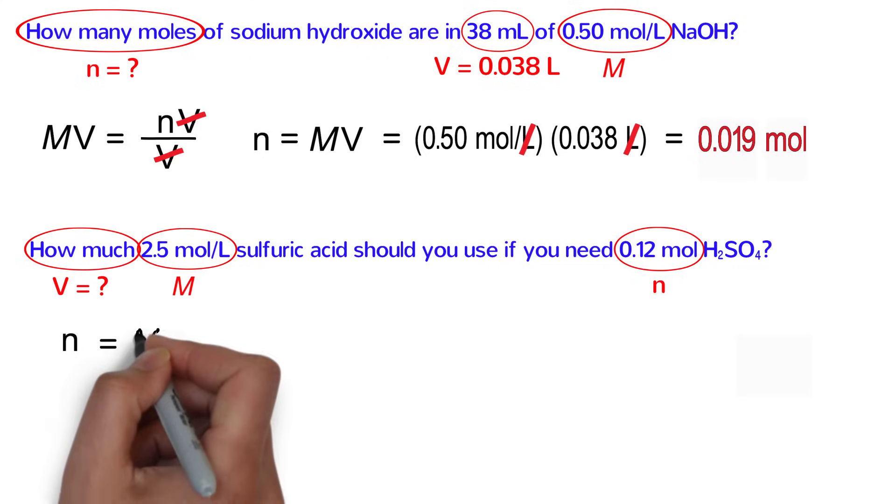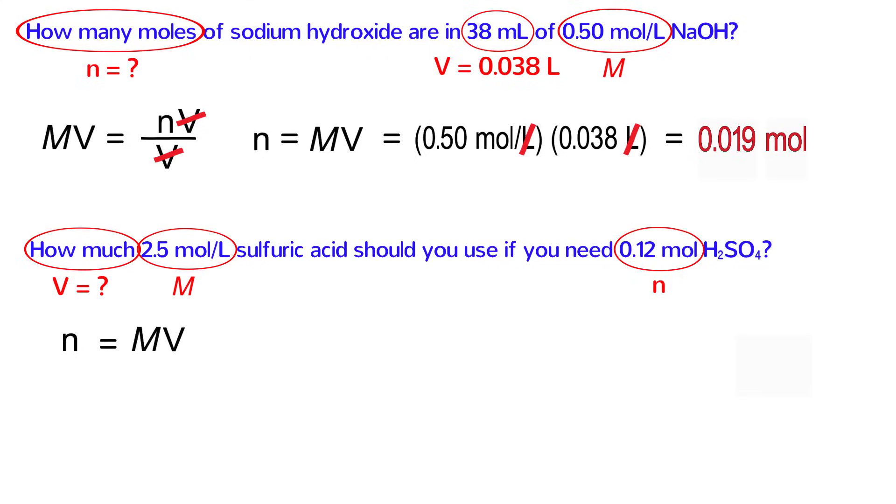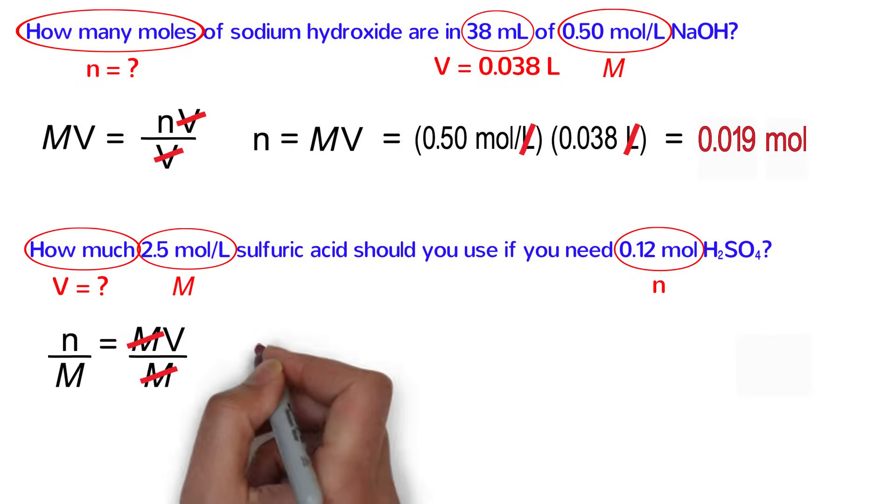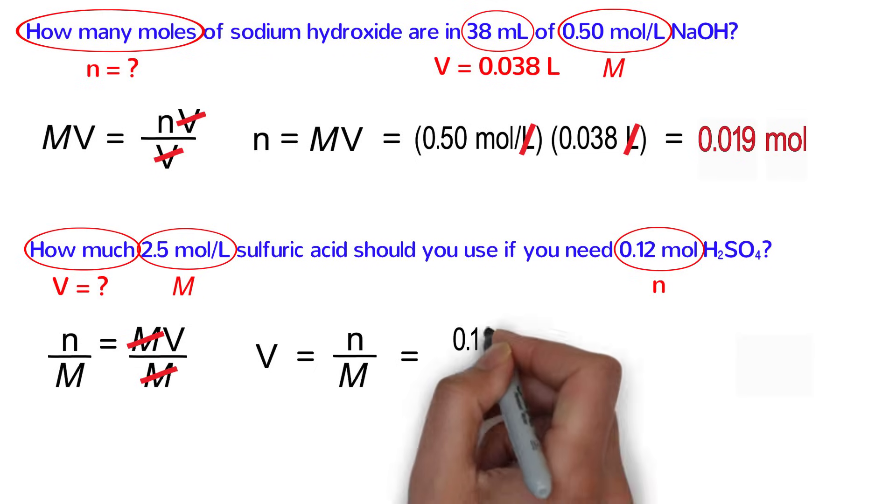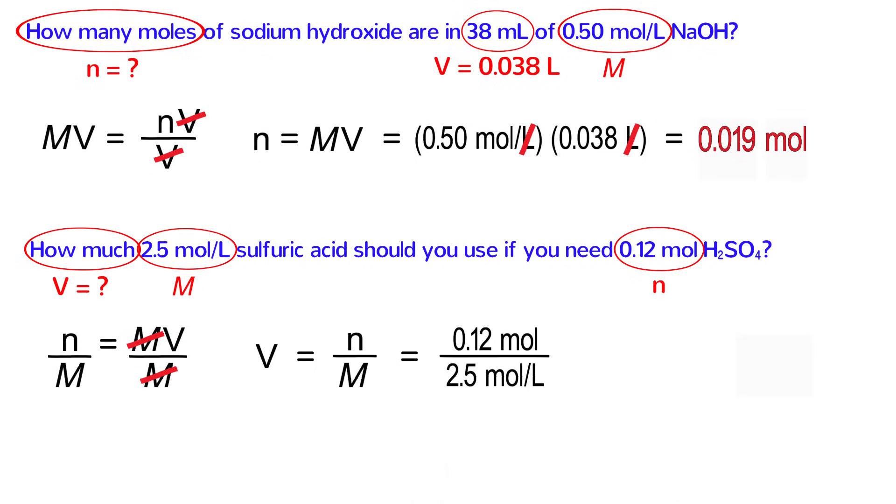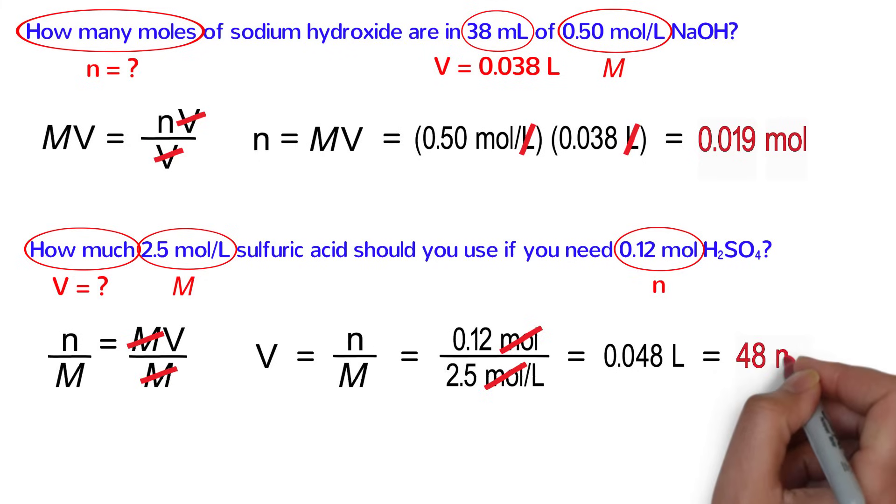We use N equals M times V because it is closer to the form of the equation we need. In order to get V all by itself, divide both sides of the equation by M. On the right side, M over M cancels out, leaving V all by itself. We can rewrite the equation as V equals N over M. Finally, plug in the values for N and M. 0.12 moles divided by 2.5 moles per liter equals 0.048. As for the units, moles in the top and bottom cancel, leaving us with liters as the units. Because the number is less than 1, we convert it into milliliters by moving the decimal point three places to the right, giving us the final answer of 48 milliliters.